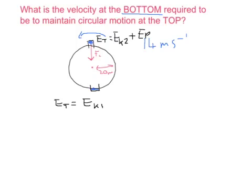So if we know 14 meters per second gives us our kinetic energy at the top, we can then backtrack. We can go from the total to find out what that kinetic energy will be at the bottom. In fact, we can form an equation like this, because the total energy is the same. We can say that EK1 at the bottom equals EK2 plus the gravitational potential energy.